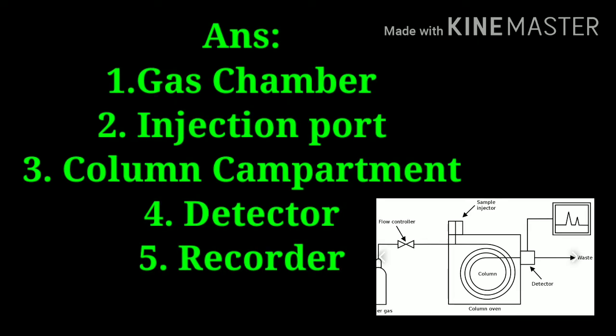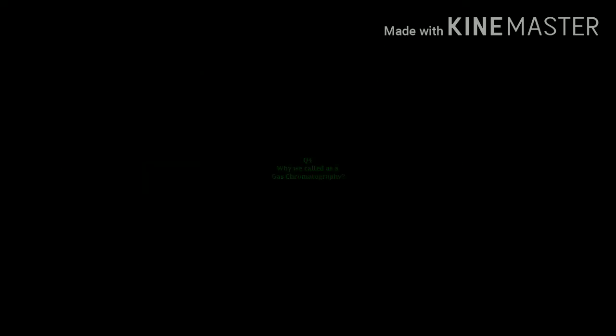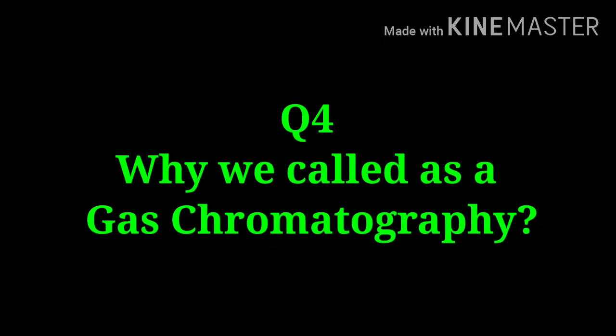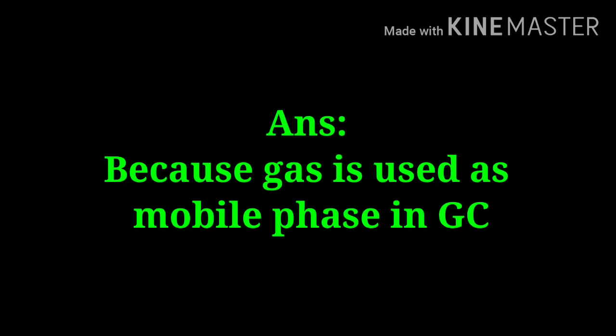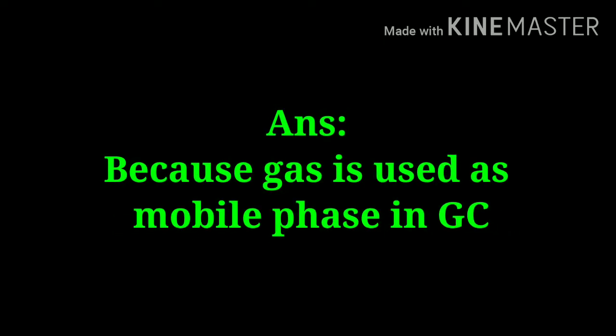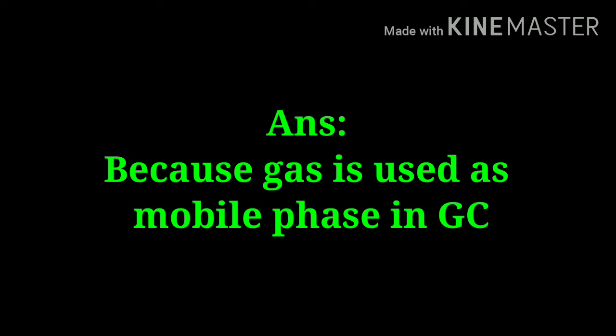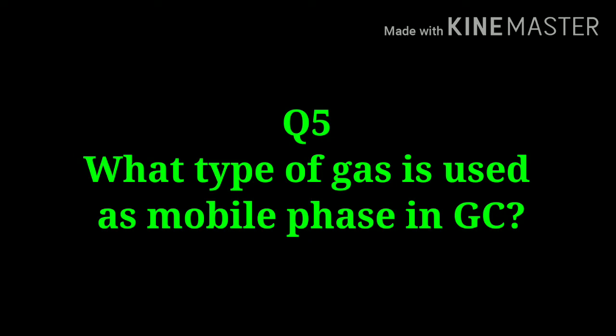The components are: gas chamber, injection port, column compartment, detector, and recorder — these are the five components of gas chromatography. Why do we call it gas chromatography? Because gas is used as the mobile phase — that is why it is called gas chromatography.